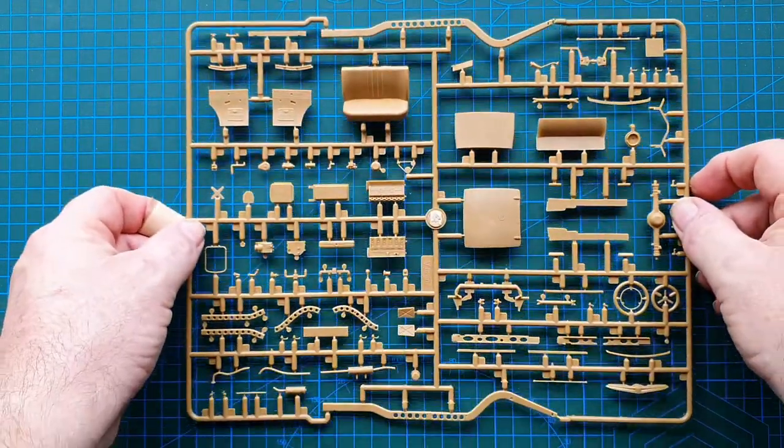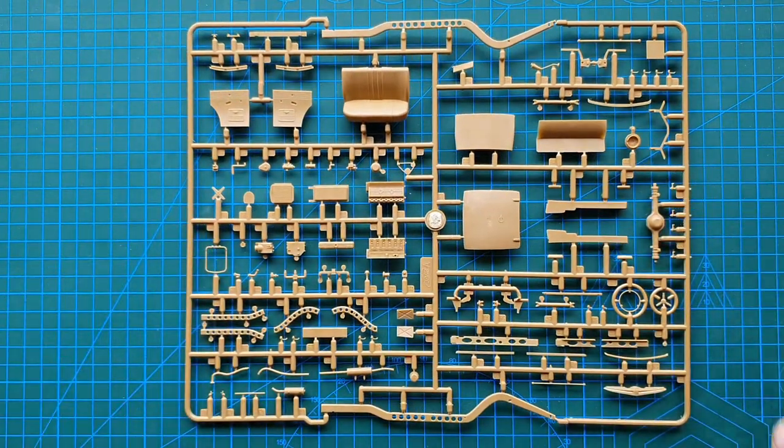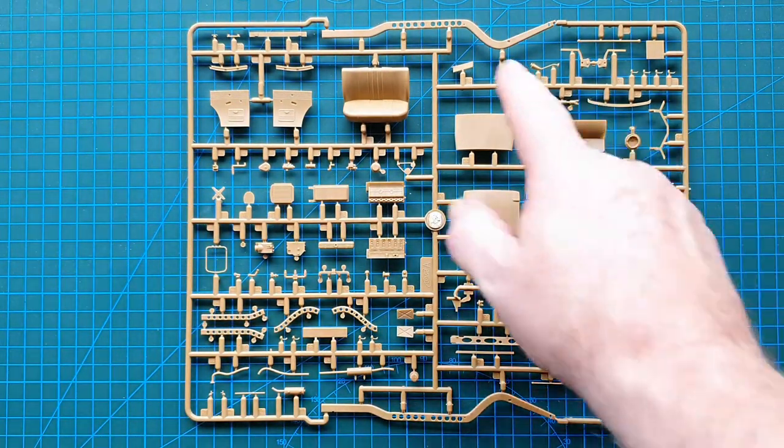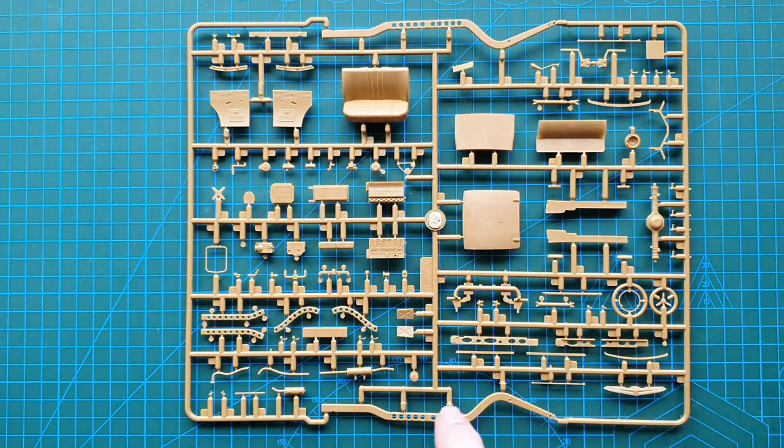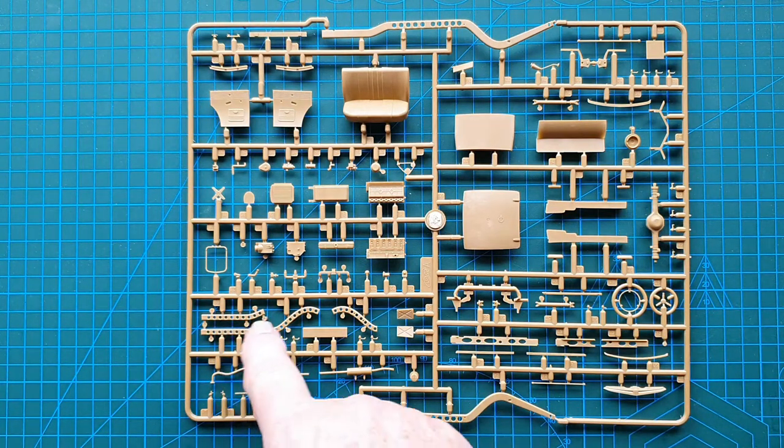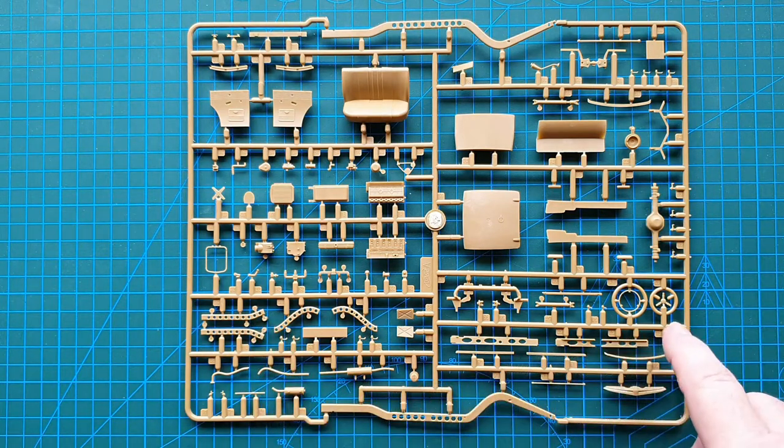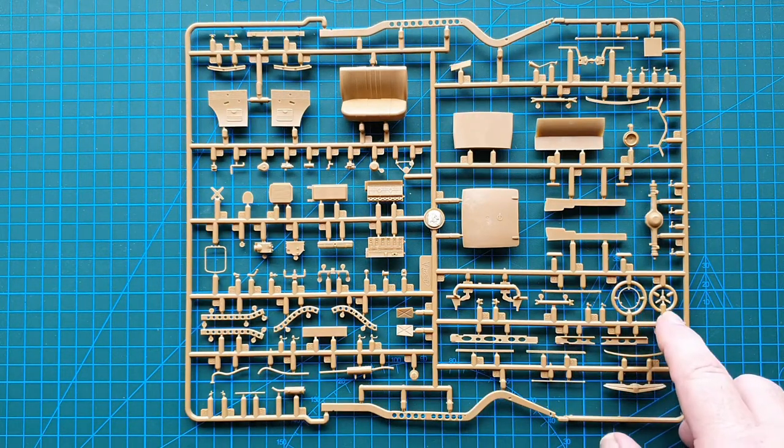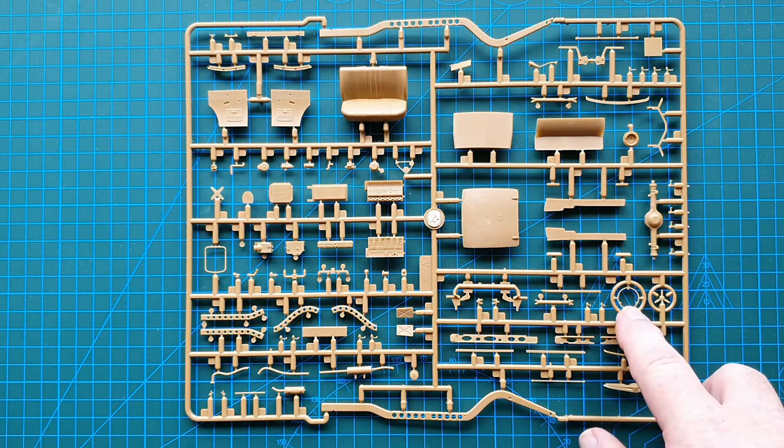Put those away. Next sprue we'll look at will be this one. This is a big sprue. So on here you've got the two chassis sides, main members, chassis parts here.